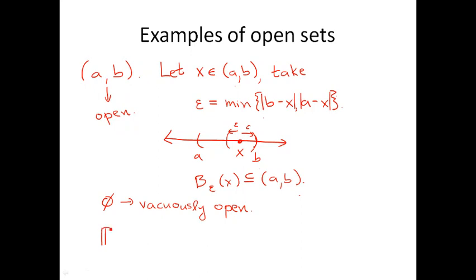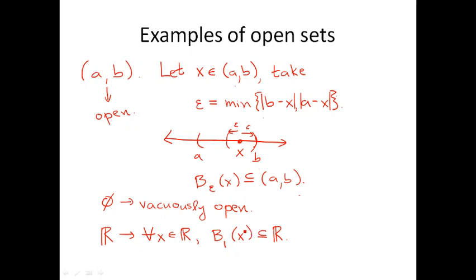Another trivial example of an open set is ℝ, the whole real line. For all real numbers x, I can simply take, for example, the 1-neighborhood of x, and certainly this is a subset of ℝ. I could have taken anything — even the 10-million-size neighborhood of x — it still is a subset of ℝ. So since this subset condition is satisfied for any real number, ℝ is indeed open.